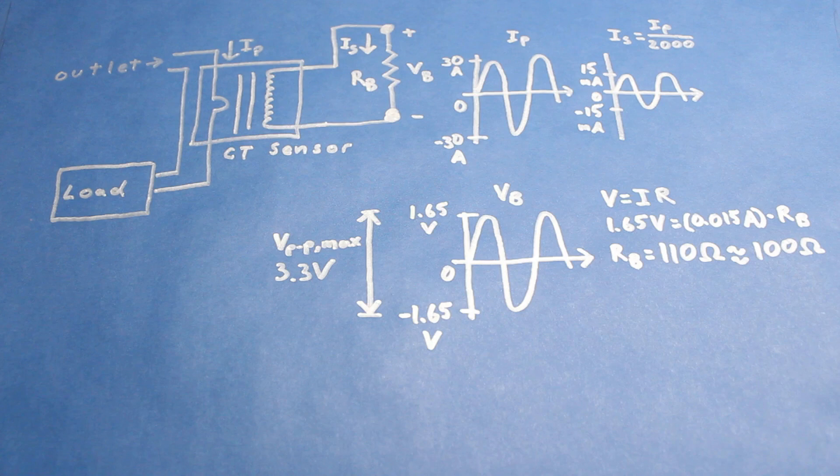While we can certainly buy a 110 ohm resistor, I happen to have a few 100 ohm resistors lying around, so we'll go with that. I recommend choosing a value of a common resistor that's lower than the ideal value for RB. If you go higher, then max current will result in a voltage that's beyond the sensing capabilities of the photon, and could possibly even damage it.